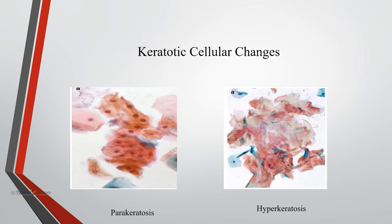In keratotic cellular changes, parakeratosis shows miniature superficial squamous cells with eosinophilic cytoplasm. Cells may be seen in isolation, in sheets, or in whorls, and cell shape may be round, oval, or polygonal, with small pyknotic nuclei. In hyperkeratosis, anucleate mature polygonal squamous cells are seen, and they may have keratohyaline granules in the cytoplasm; empty spaces or ghost cell nuclei may be seen.